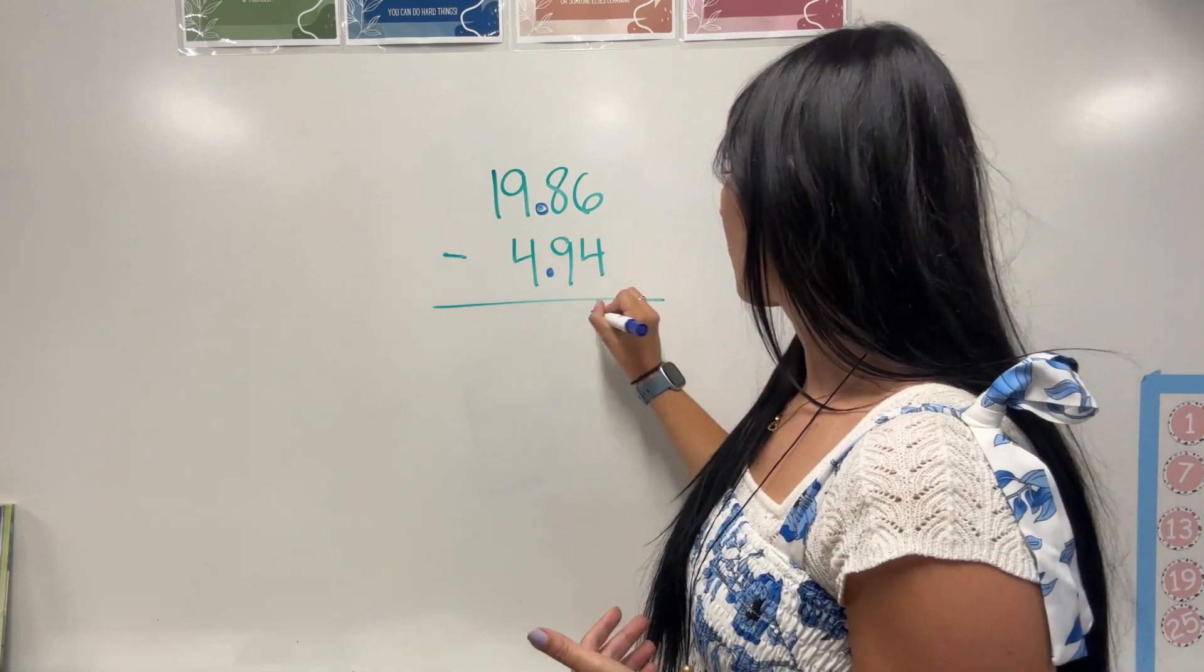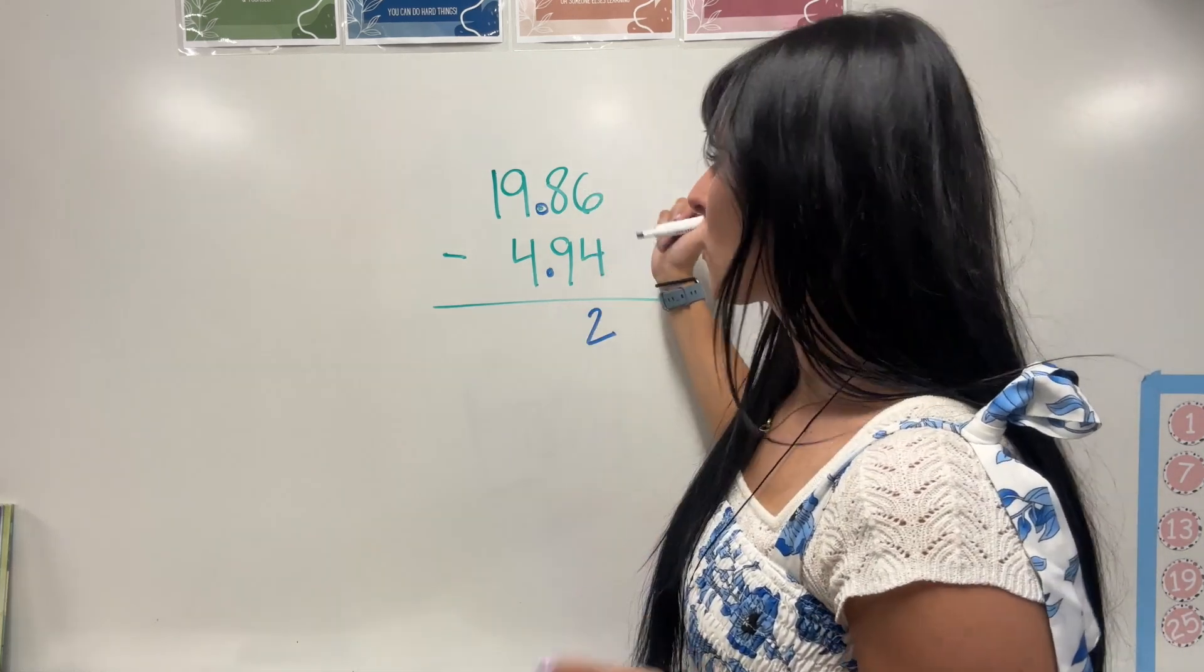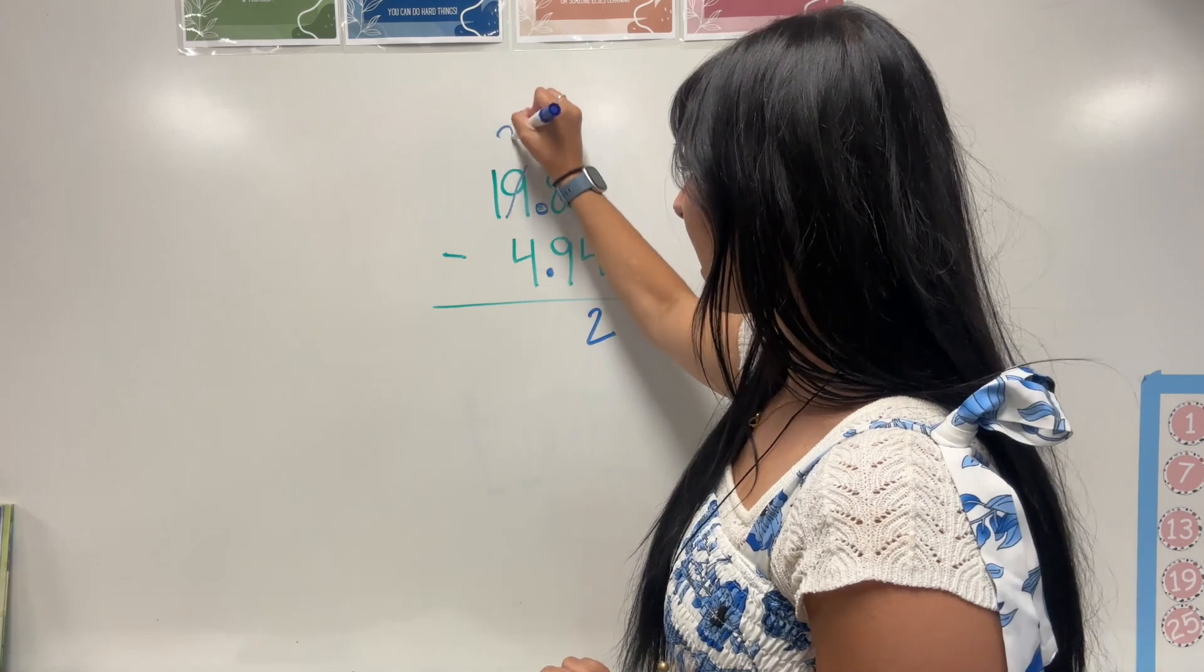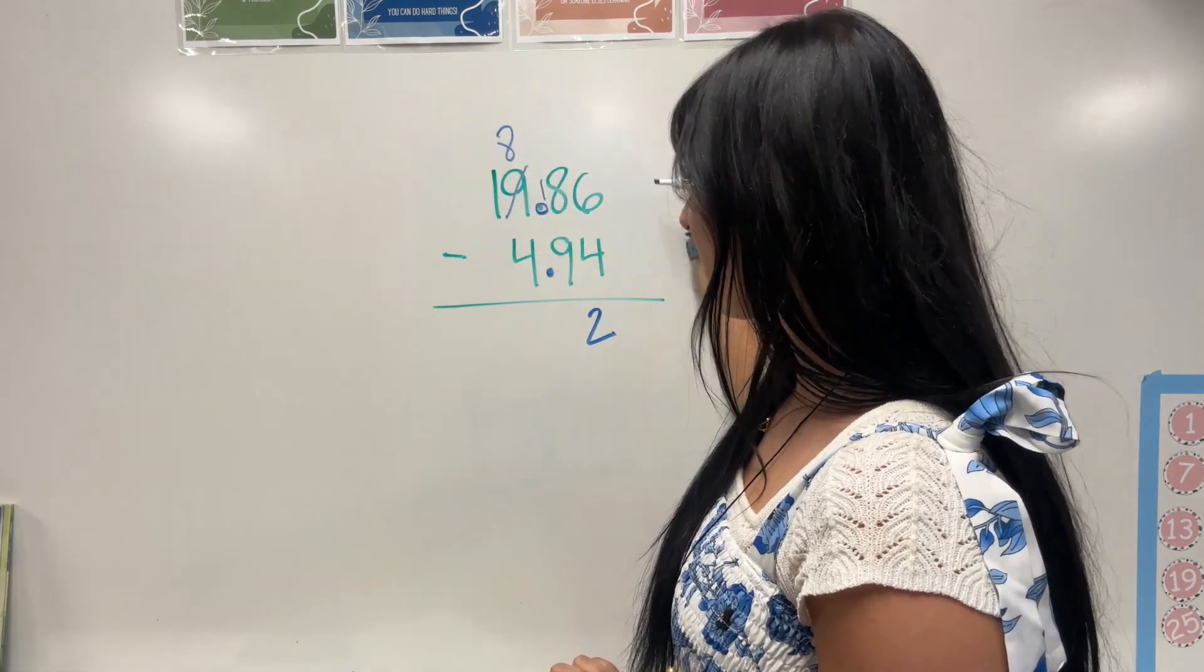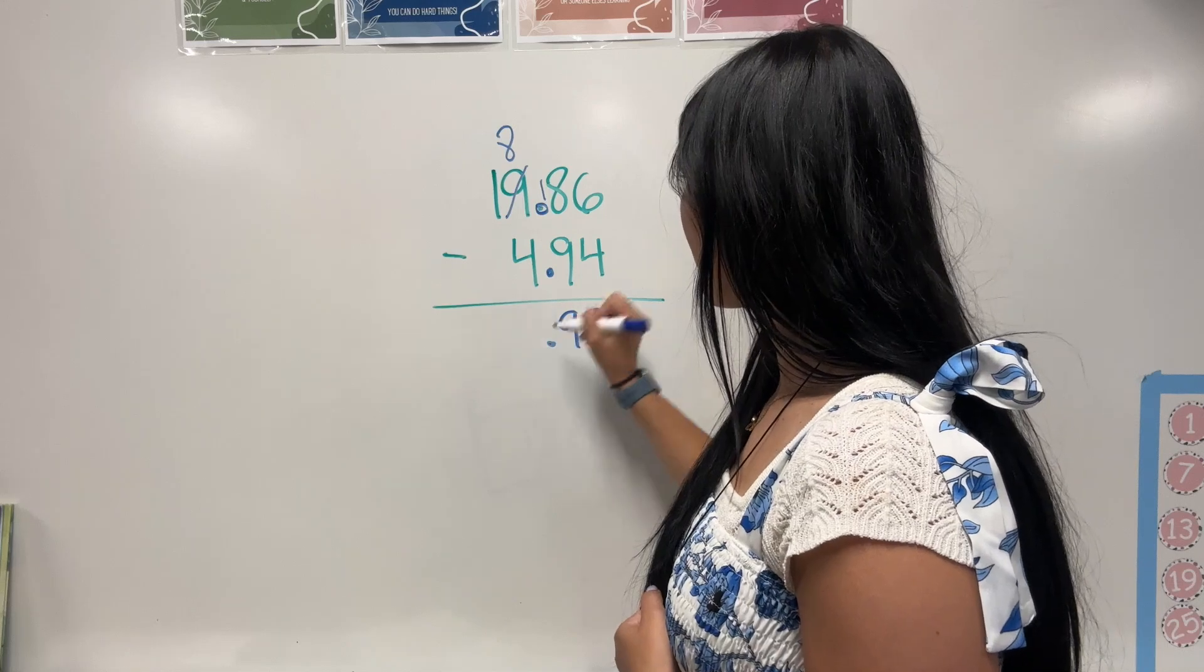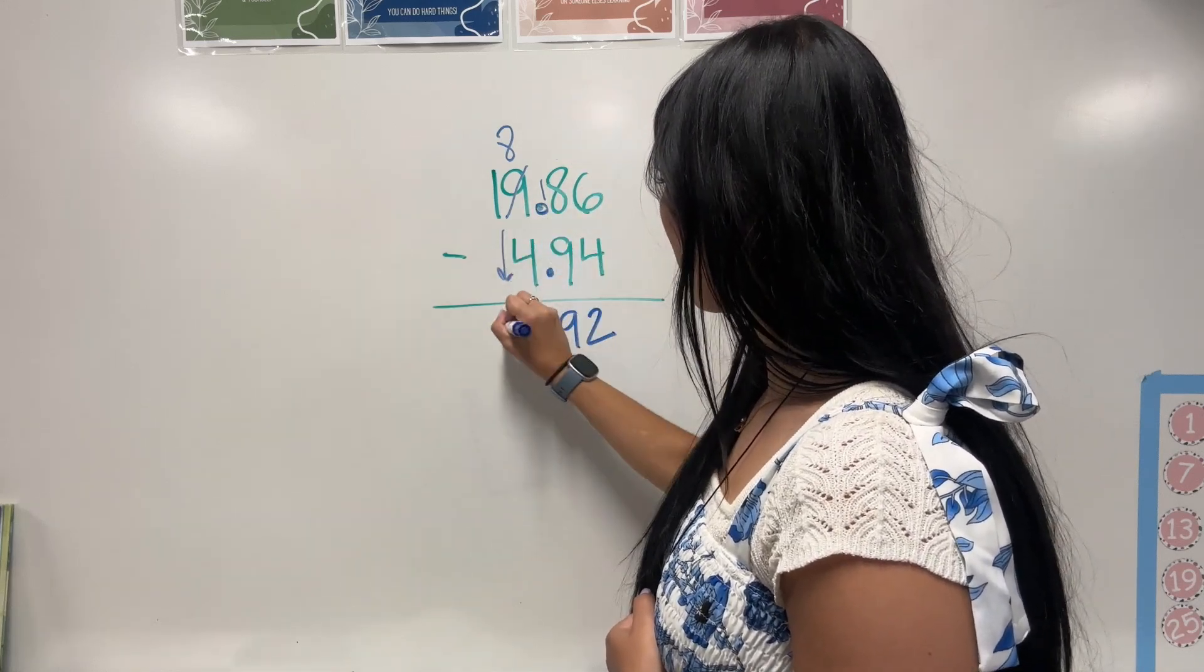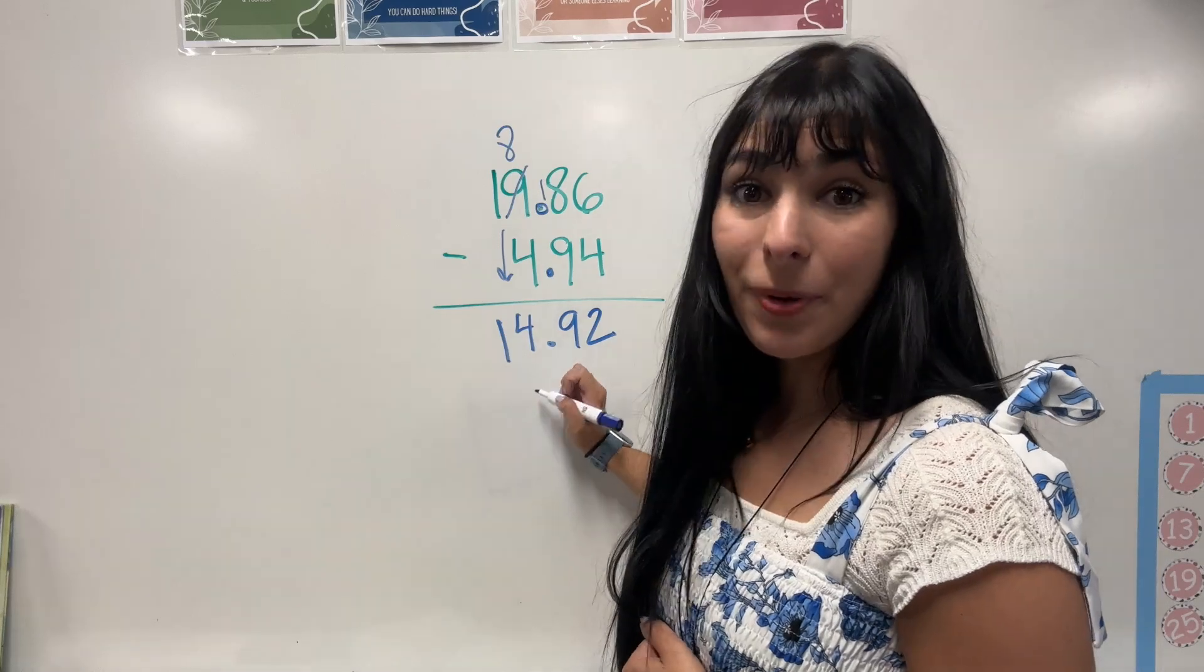So 6 take away 4 gives us 2. 8 take away 9. I can't do that so I need to borrow. Borrowing that 9 turns into an 8. We put that there so now we have 18. 18 take away 9 is 9. Bring down that decimal. 8 take away 4 is 4 and then we're going to bring down that 1. So our answer is 14.92.